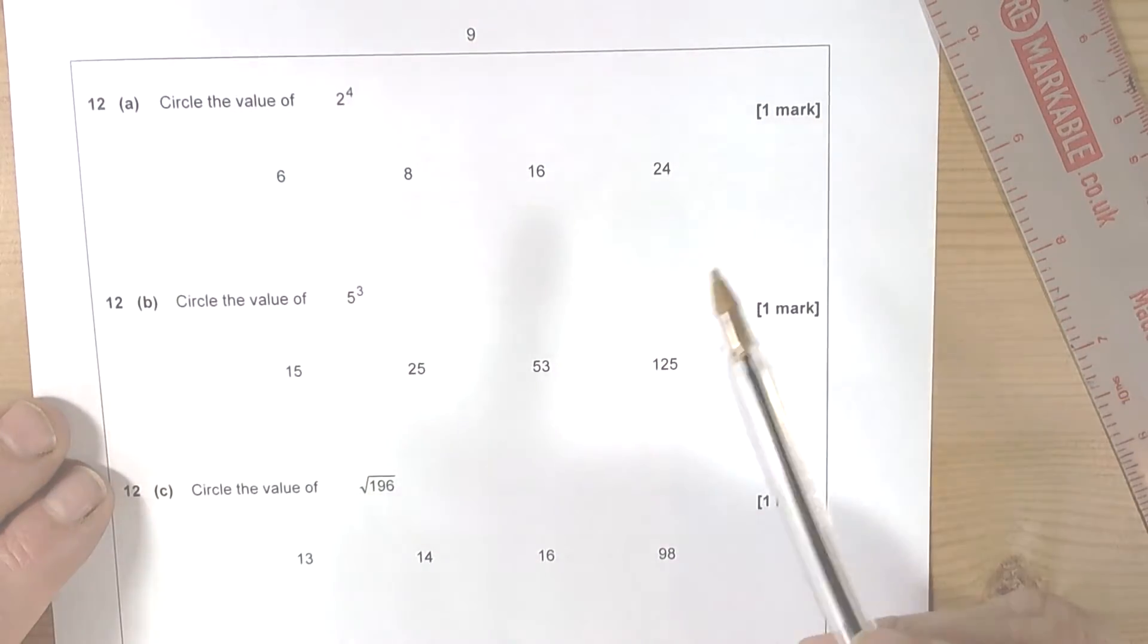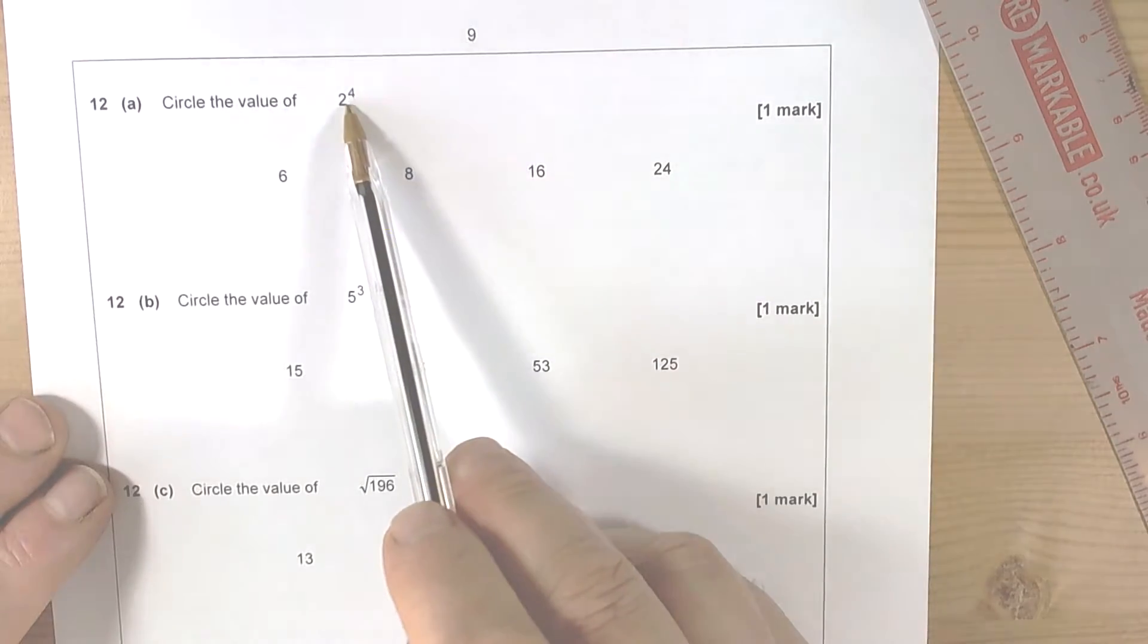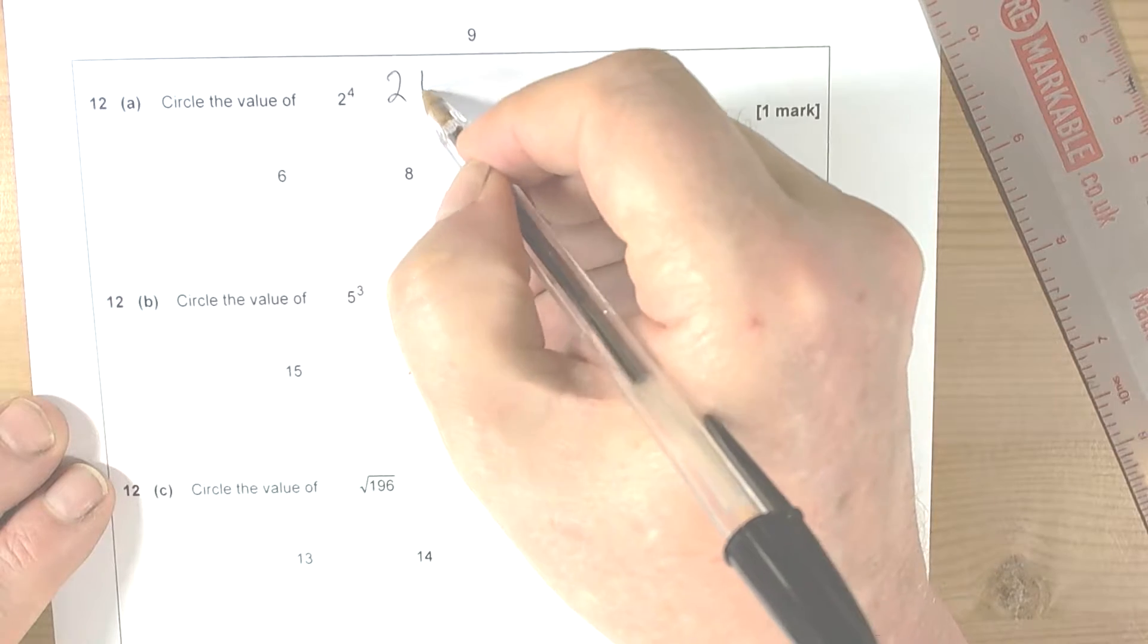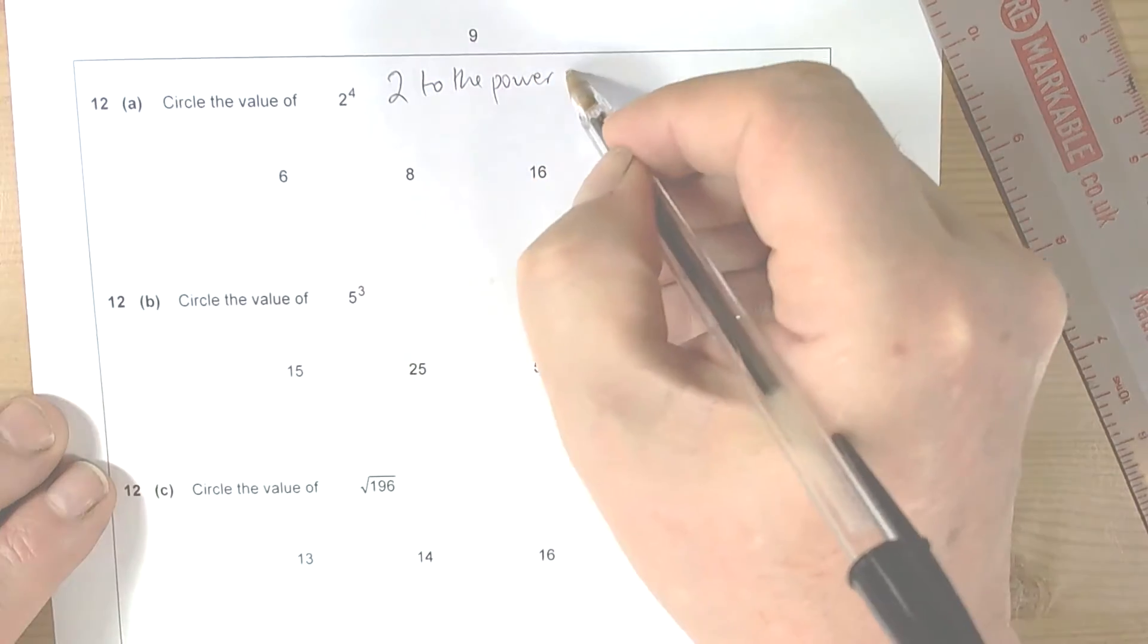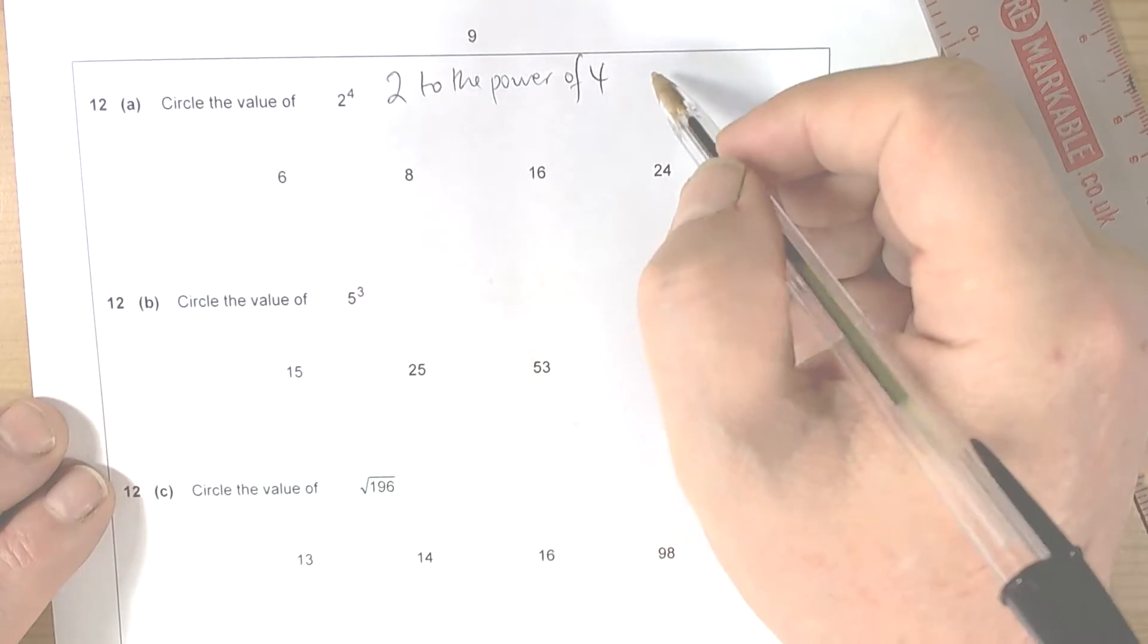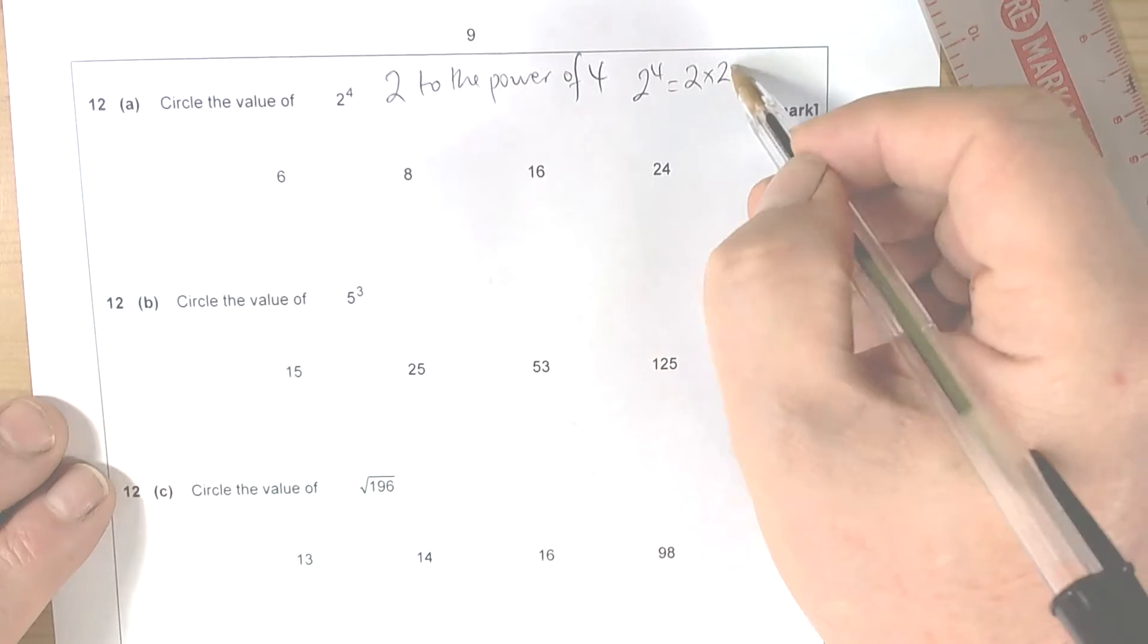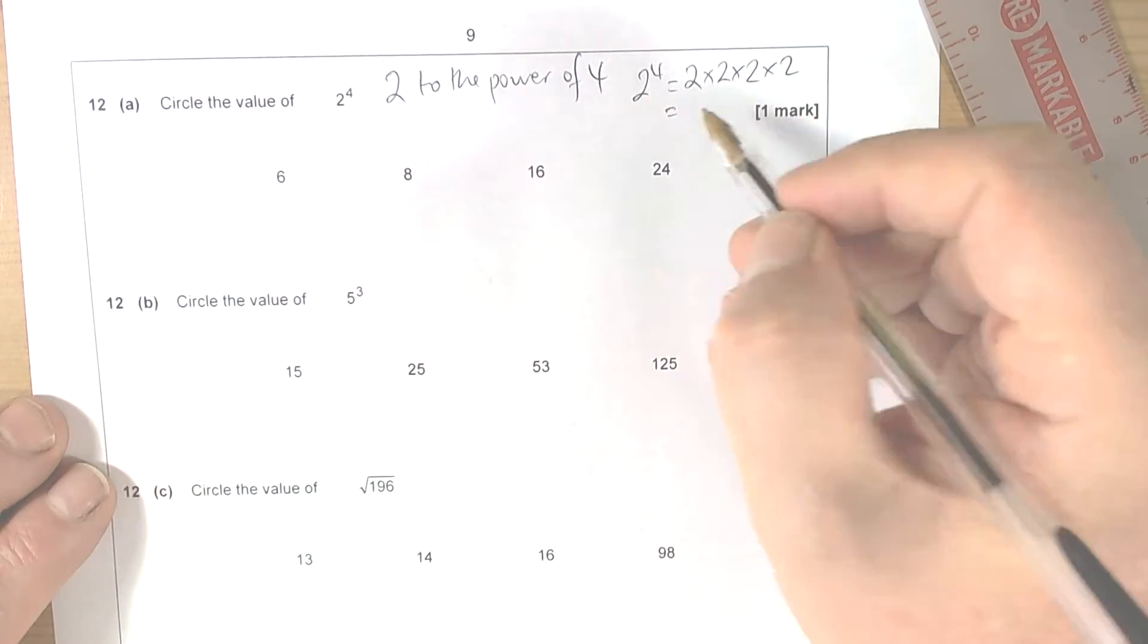OK, so we've got some questions here involving powers and roots. We've got to realize what 2 to the little 4 means. Well, it's 2 to the power of 4, that's how we'd say it. And what it means is 2 to the power of 4 means we're doing 2 times 2 times 2 times 2.